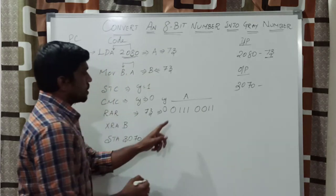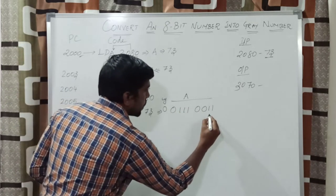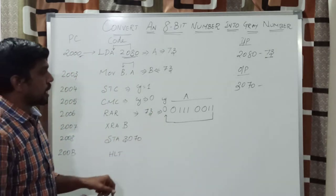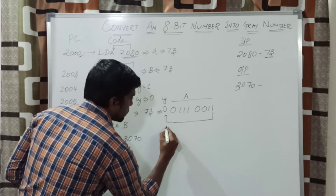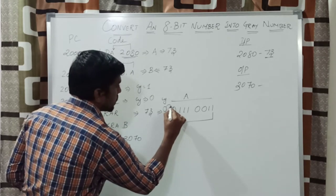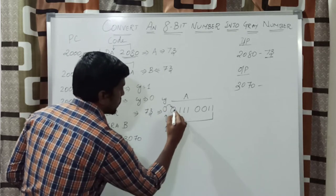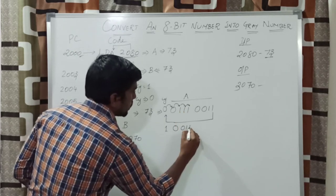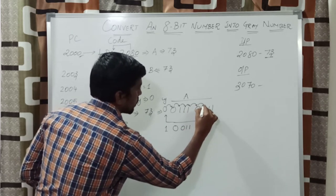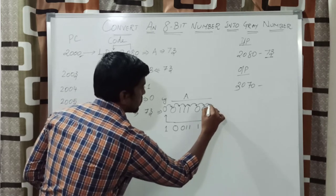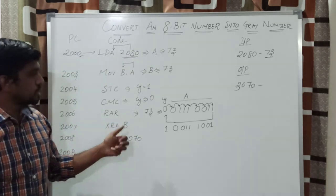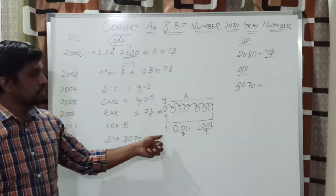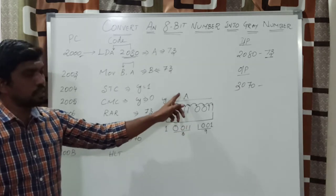The accumulator content is 73. After execution of this instruction, you rotate the accumulator content in the right direction with the carry value. The LSB bit becomes equal to the carry. The carry bit is now 1, and this carry bit propagates to the MSB first bit. After rotation, you get the result: accumulator content becomes 39, and the carry value is 1.